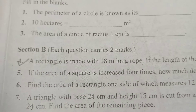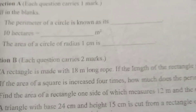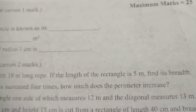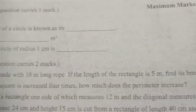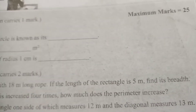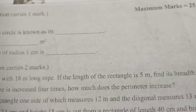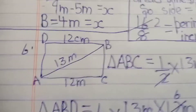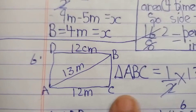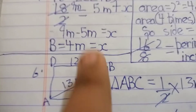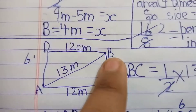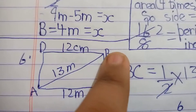Next question: find the area of a rectangle, one side of which measures 12 meters and the diagonal measures 13 meters. We draw the rectangle and label its sides.